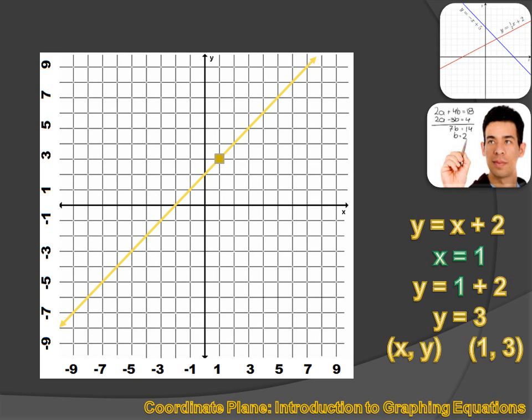On the coordinate plane, it appears right there where x equals 1 and y equals 3. That's the point 1, 3.